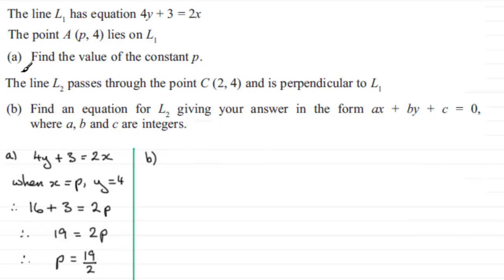In part B we're told that the line L2 passes through the point C which has coordinates (2, 4) and is perpendicular to the line L1. And we've got to find an equation for L2 giving our answer in the form AX plus BY plus C equals 0 where A, B and C are integers.